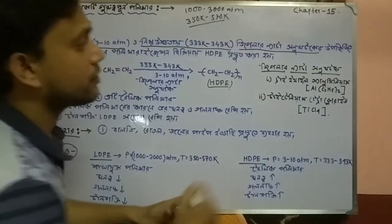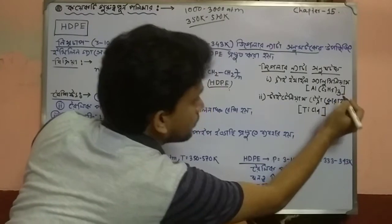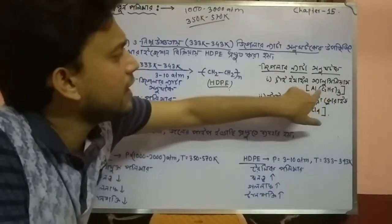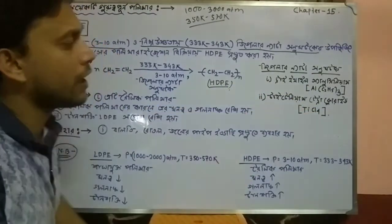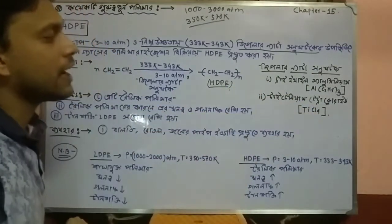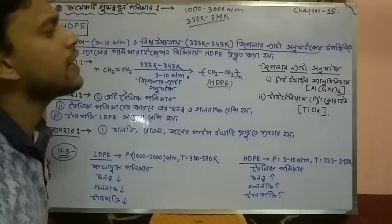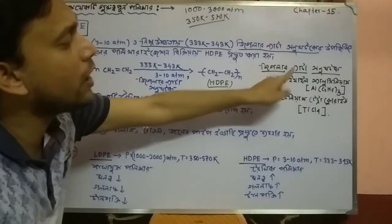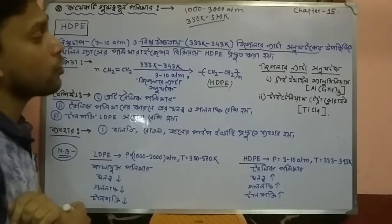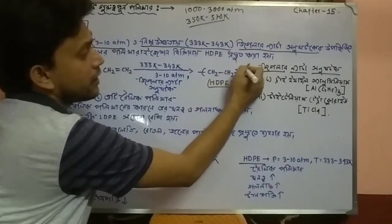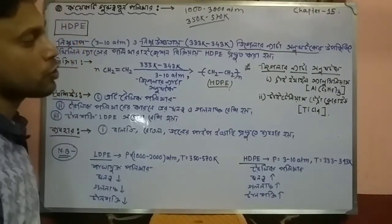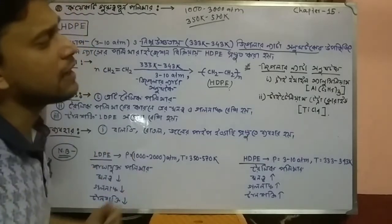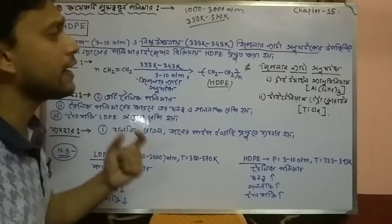Al(C2H5)3 — Triethyl Aluminium — and Titanium Tetrachloride. Triethyl Aluminium, Al(C2H5)3, and Titanium Tetrachloride — these are the components of the Ziegler-Natta catalyst used for high density polyethylene.